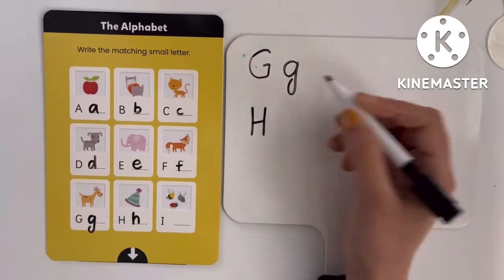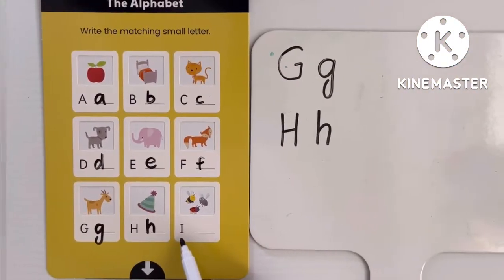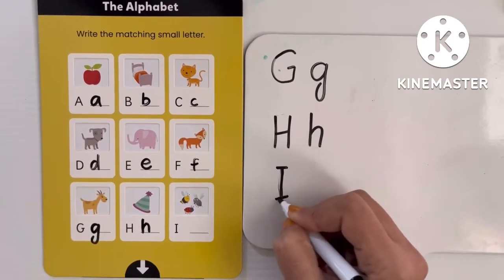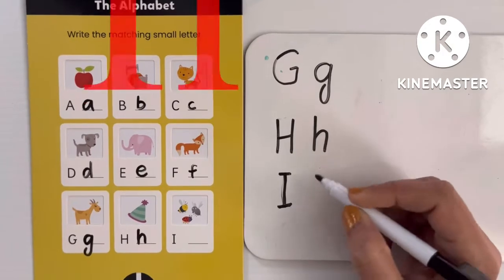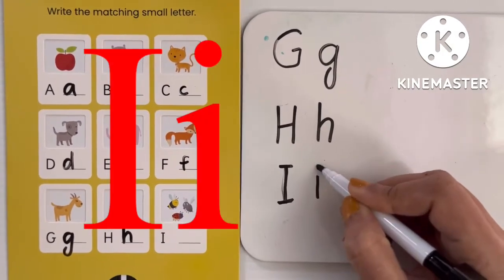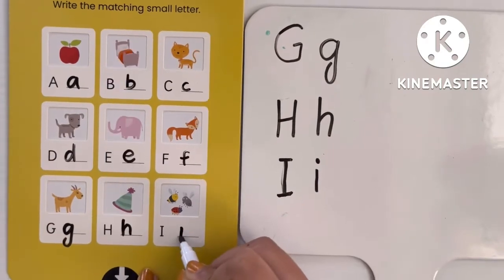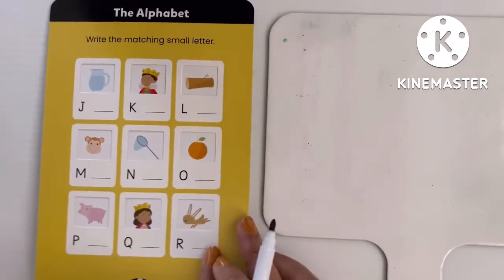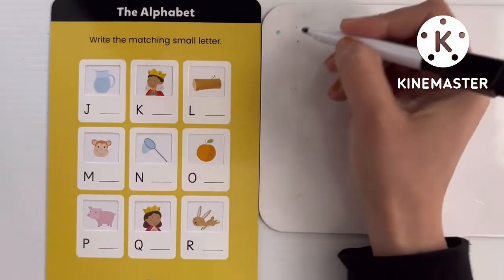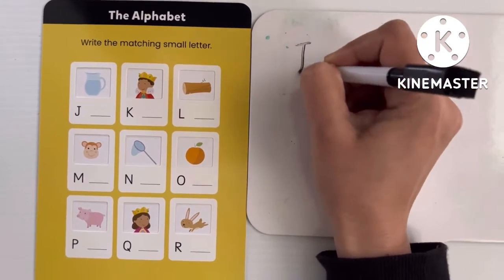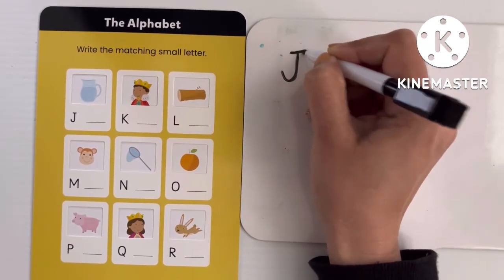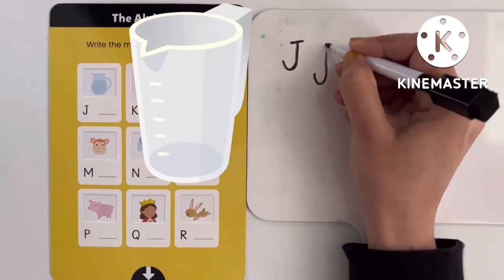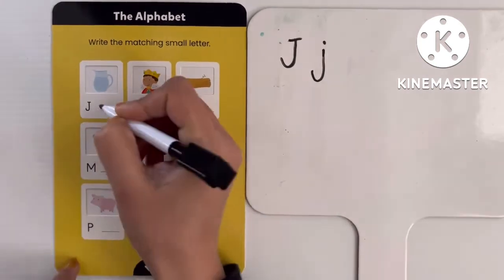Next is I. This I is capital I. In lowercase we write: i. So this one is lowercase I. Our next letter is J. In uppercase we write J like this — J for jug. And in lowercase it will be like this: j.